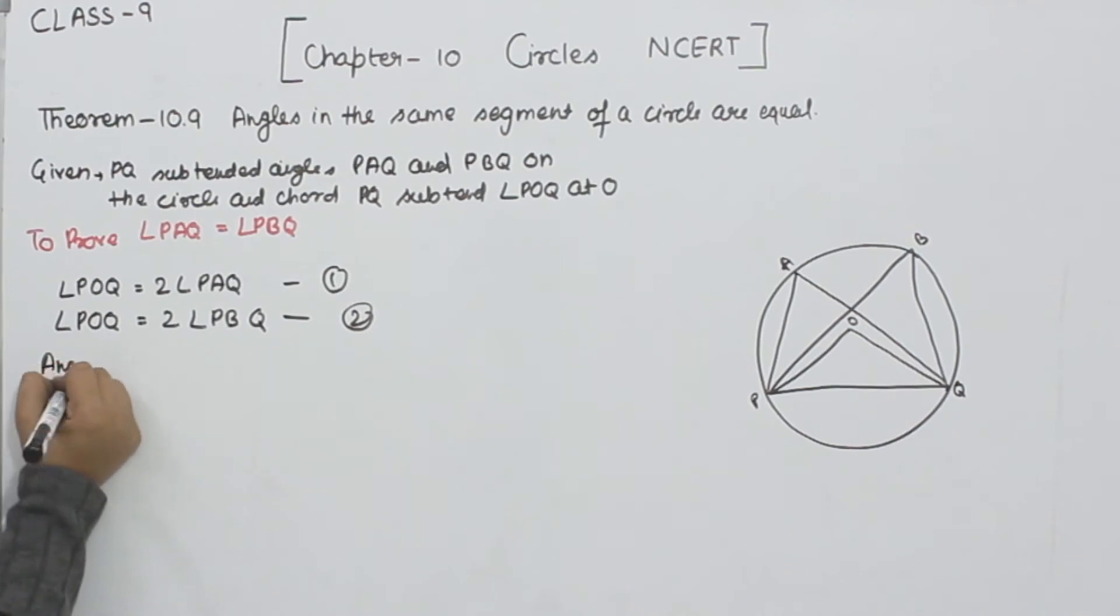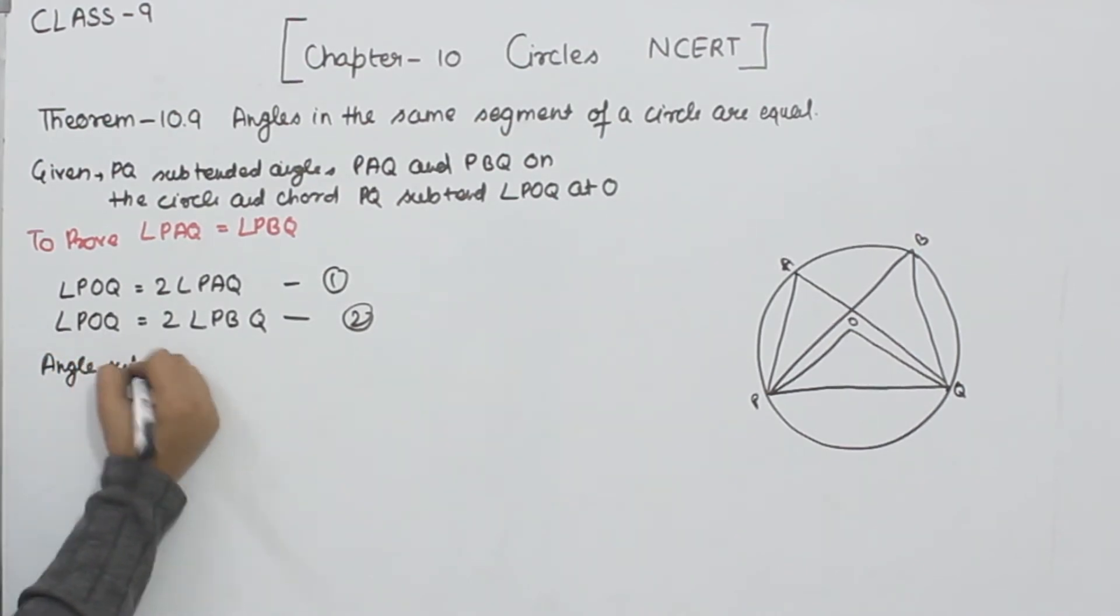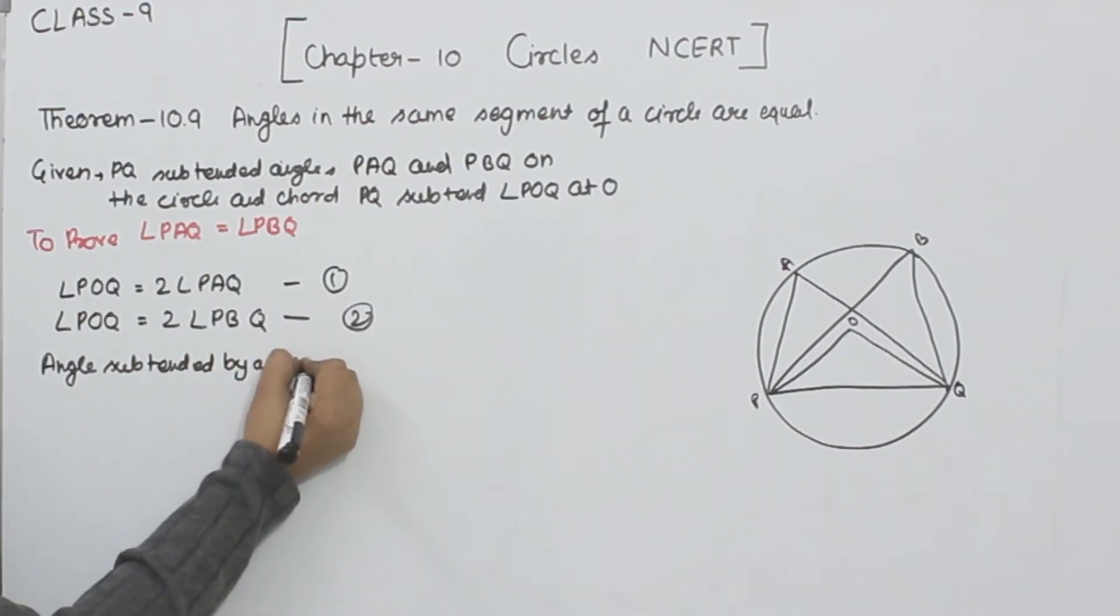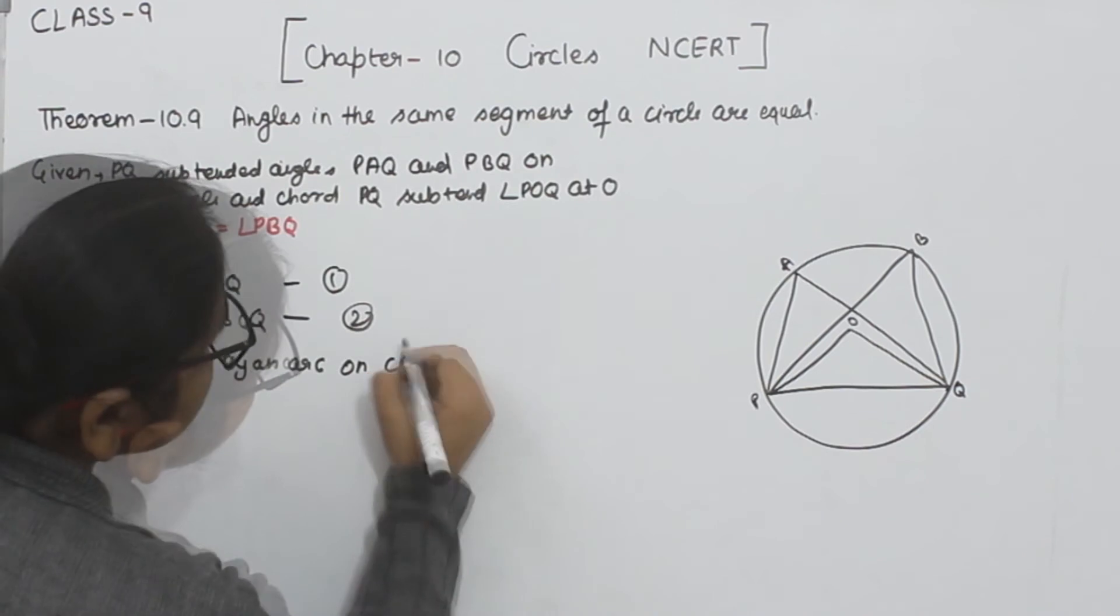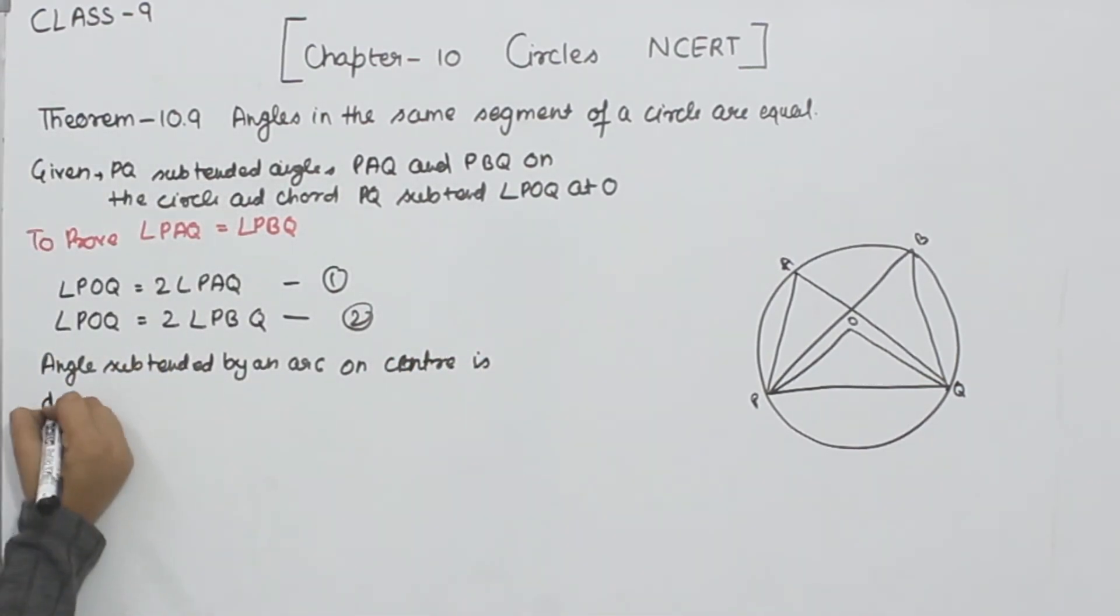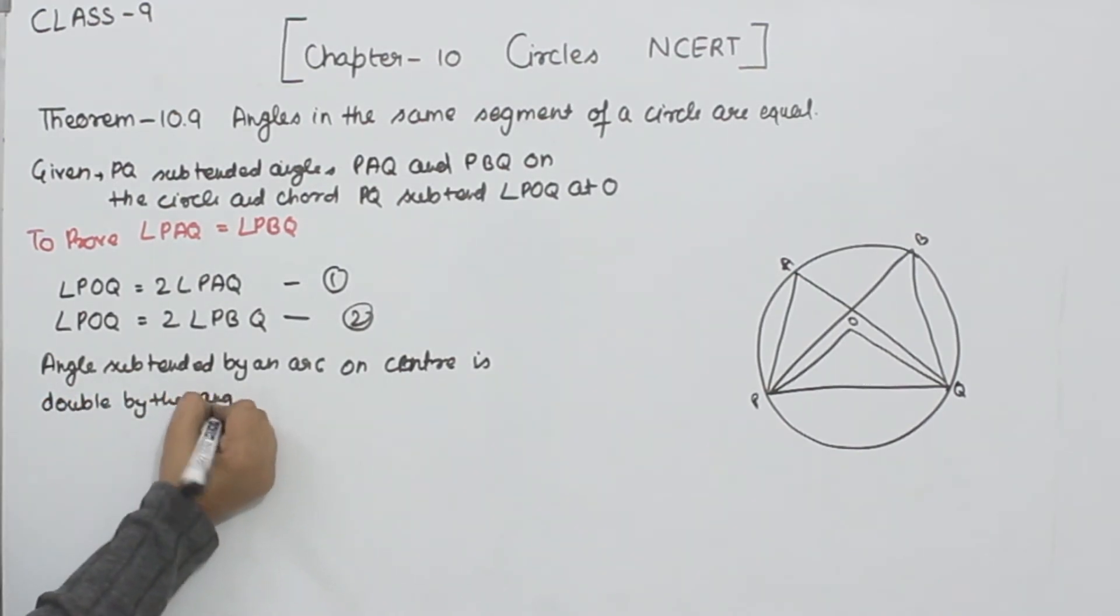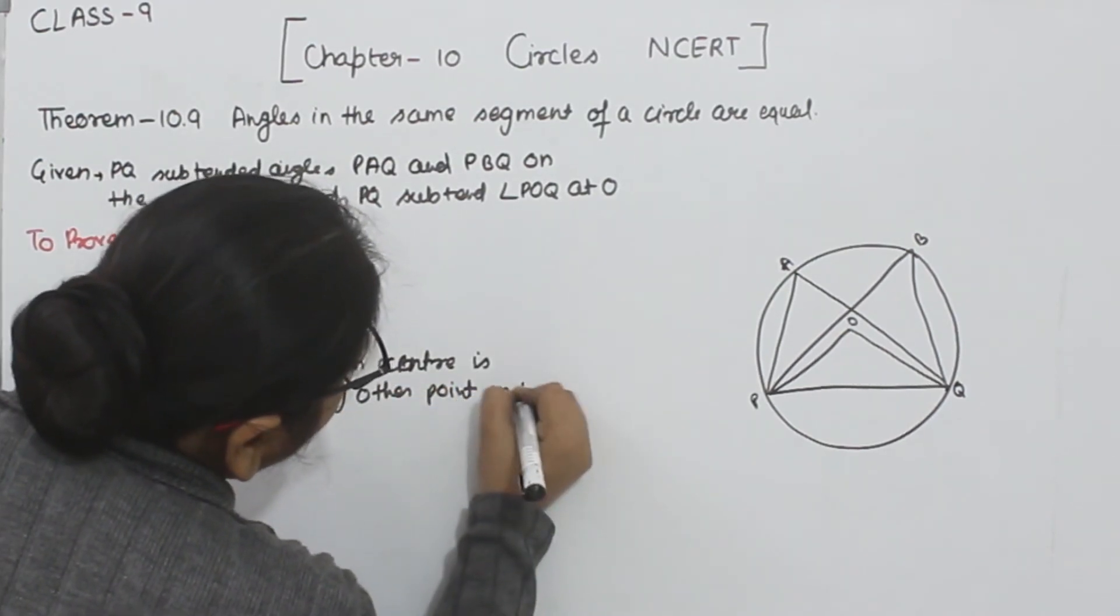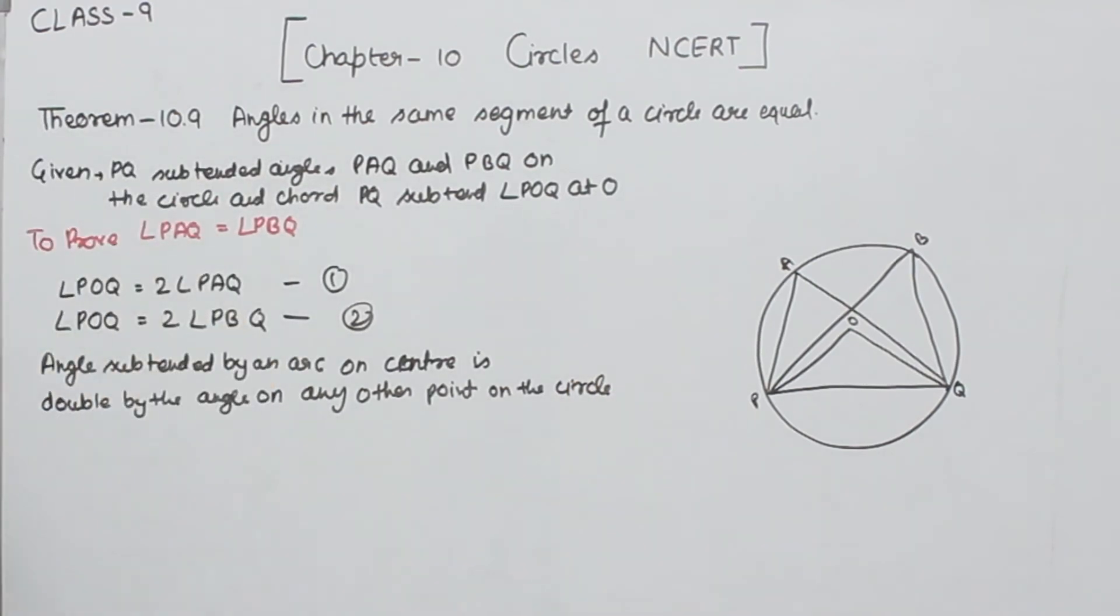Because angle subtended by an arc on center is double the angle on any other point on the circle. That's why they are 2 times the given angles.